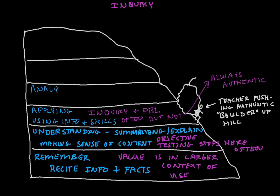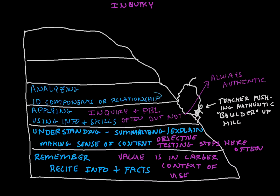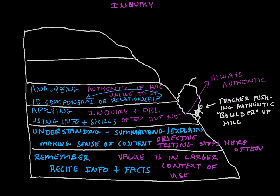Level 4 is analyzing — identifying components of a broader concept or the interrelationships between components of a larger concept. It can still be done in an inauthentic way, though. A detailed analysis of the relationships between the Axis powers in World War II could require this, or the cause of the Great Depression. Studying those kinds of complex things, but if they aren't in a context meaningful to the student, then they're still not going to be authentic.